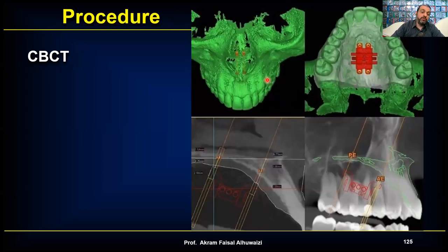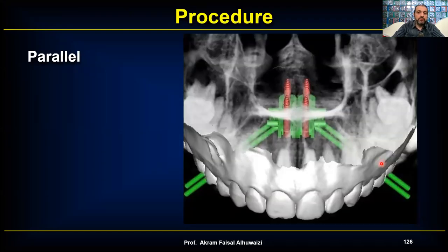A CBCT is preferable so you can measure the distance from the MARPE to the nasal floor and choose between 11 mm and 13 mm screws accordingly. Parallelism of the screws is important — the tight guiding holes in the MSE ensure the screws go in parallel and prevent major tipping during insertion.